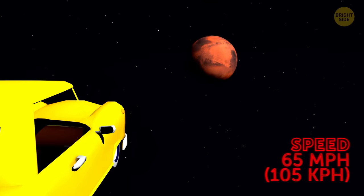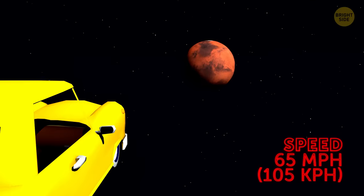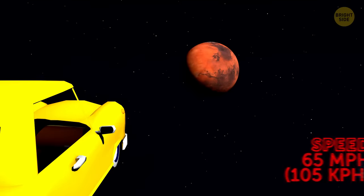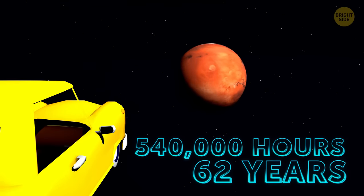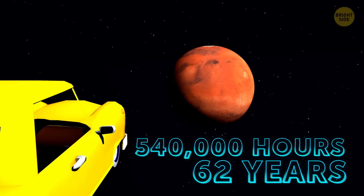If you traveled to the red planet by car, at a speed of 65 miles per hour, you're going to want to bring a big lunch. You would spend 540,000 hours, which is more than 62 years, in your vehicle. Better change your oil while you can.